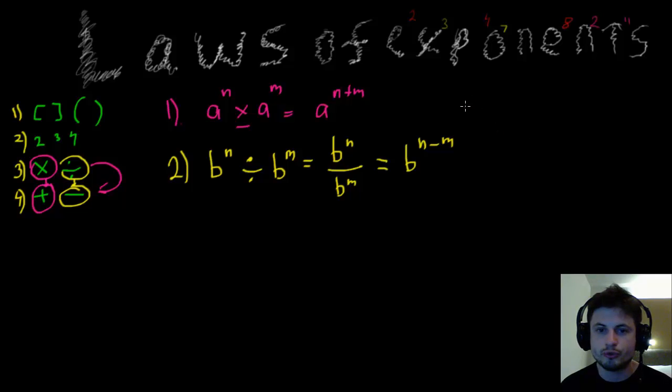You have division and it becomes subtraction. So you'll get B to the N minus M. In other words, let's just do a quick example here. If you have 2 squared multiplied by 2 to the power of 3, you will have 2 to the power of 2 plus 3 or 2 to the power of 5. And if you have 2 squared divided by 2 cubed, you will have 2 to the 2 minus 3, which is 2 to the power of minus 1.